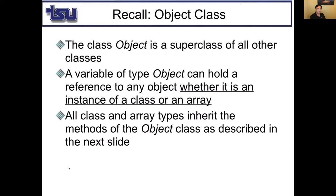First, let's remember what the Object class was. Object class is the mother of all classes. That's the super class of all other classes. A variable of type Object can hold a reference to any object, whether it is an instance of a class or an array.